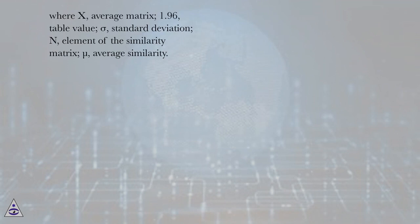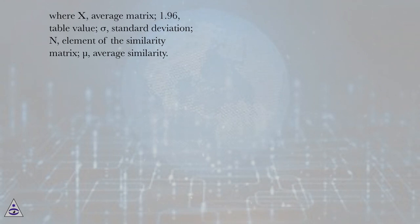In equation 5: x is the average matrix; 1.96 is the table value; sigma is the standard deviation; n is the element of the similarity matrix; and mu is the average similarity.